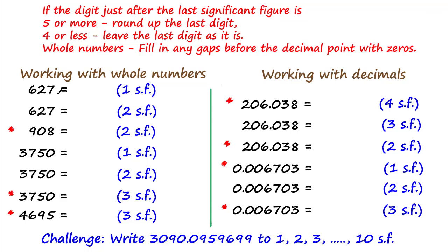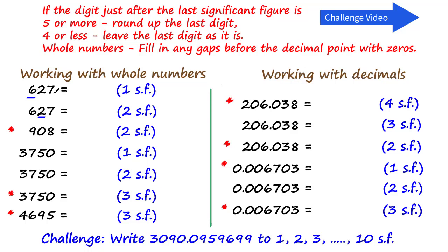Let's get started working with 627, rounding to one significant figure. The first significant figure is the first digit — the 6. The second significant figure would be the 2. When approximating 627 to one significant figure, we're looking at the value of the 6, which represents 600. We're asking whether this number is closer to 600 or 700 — clearly it's closer to 600, with 650 being the midpoint. So 627 to 1sf is 600.